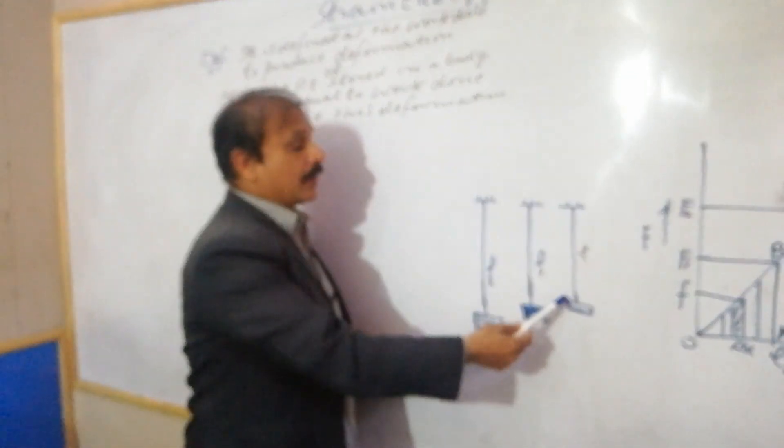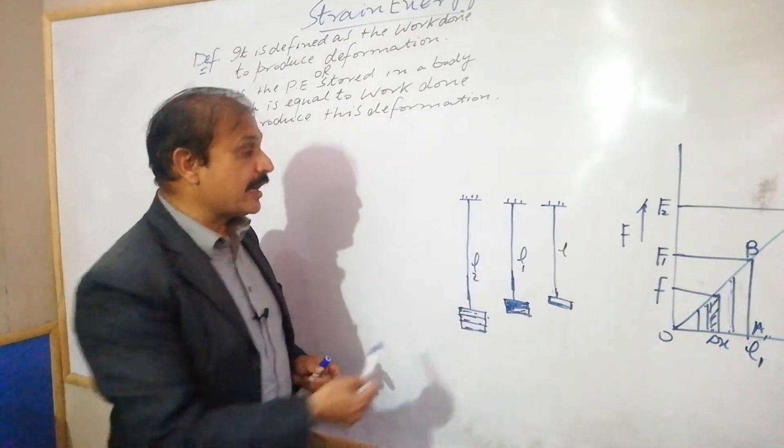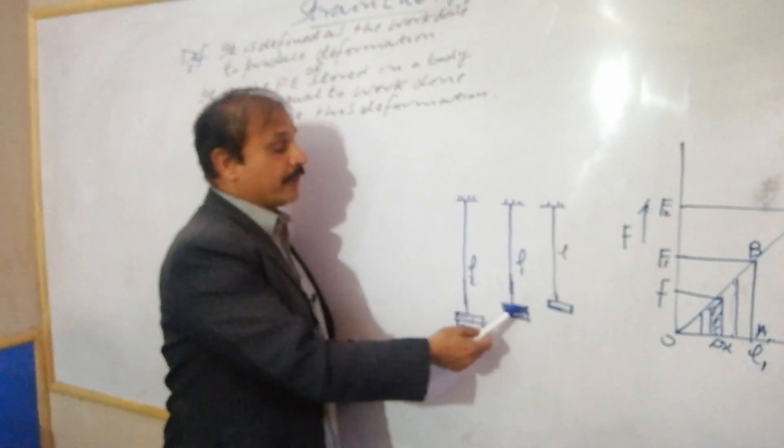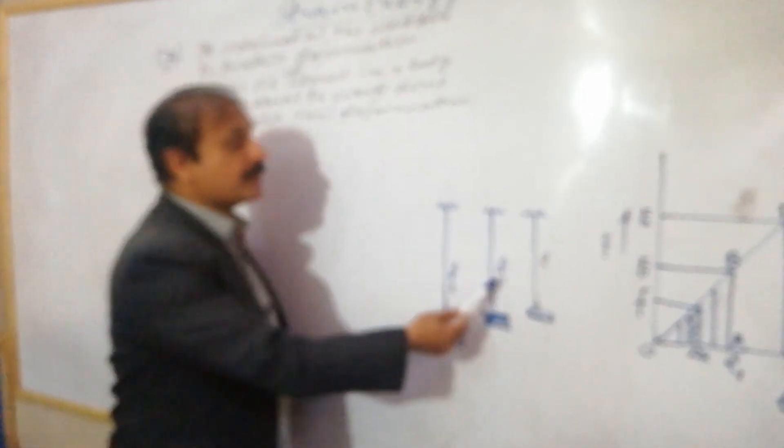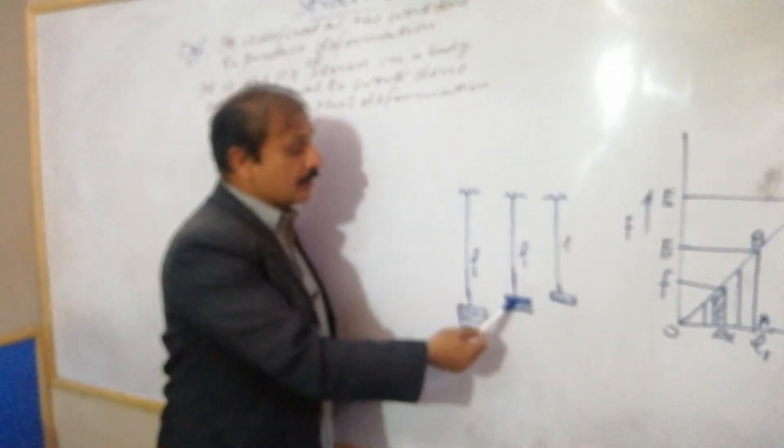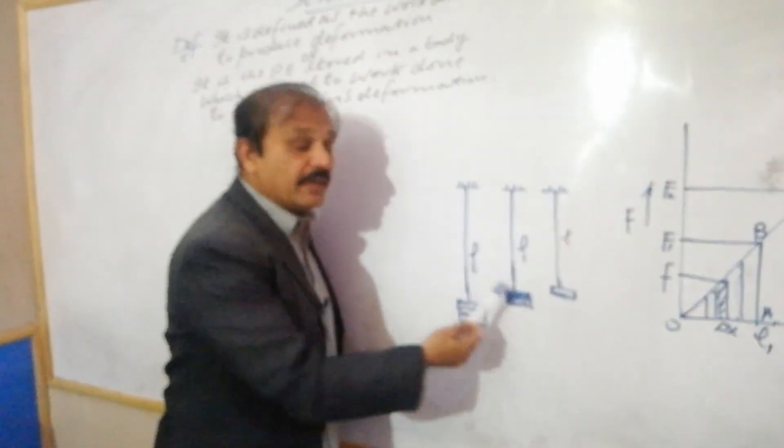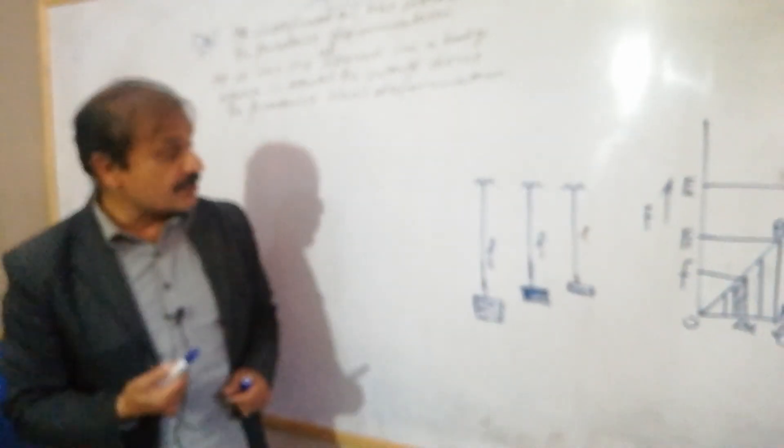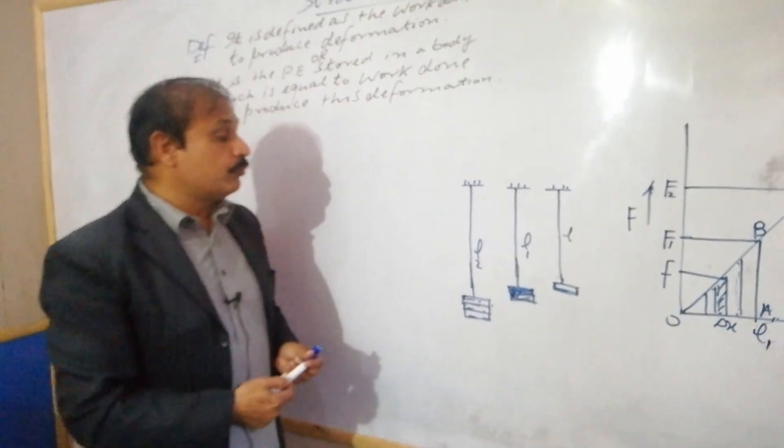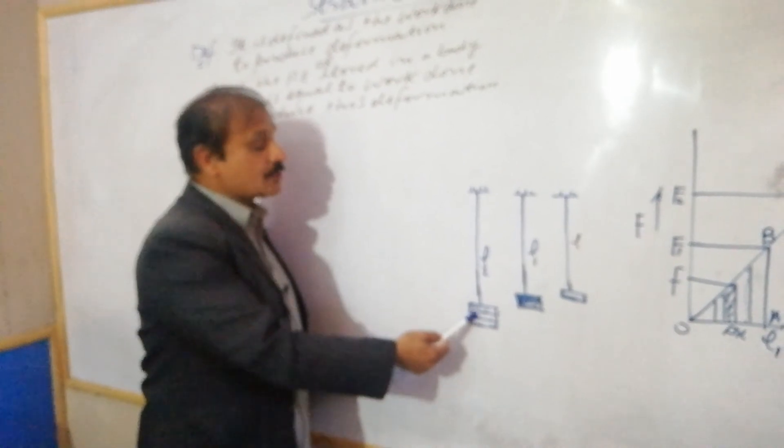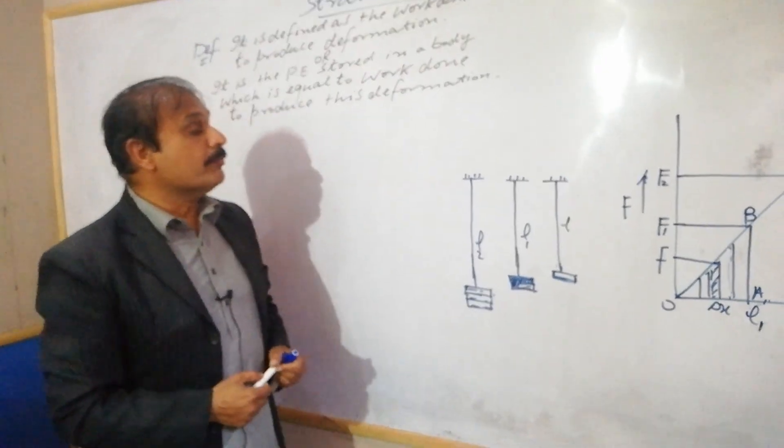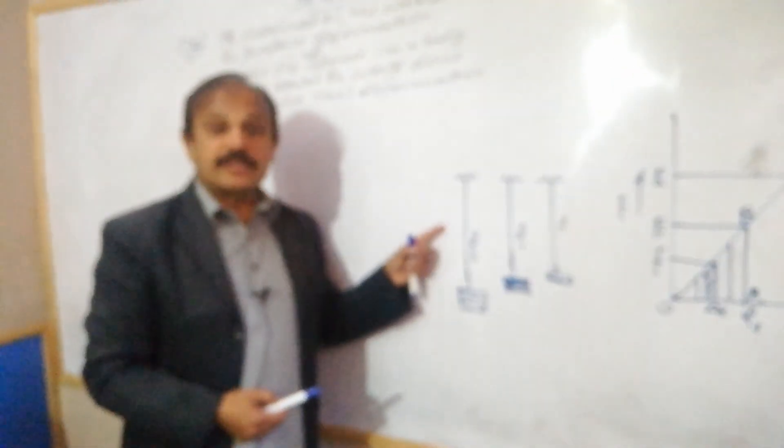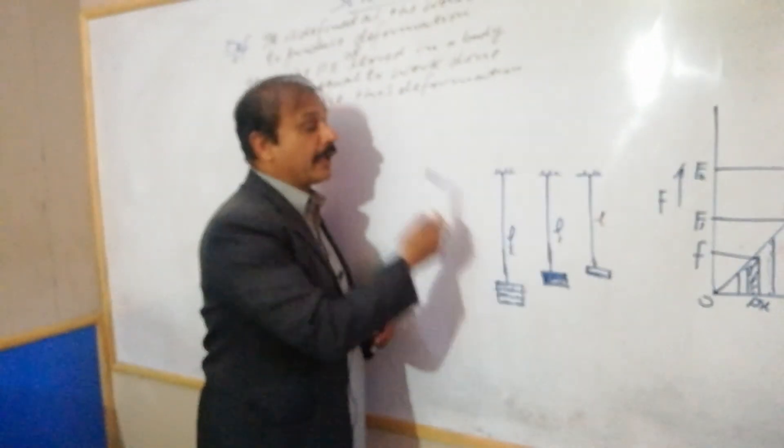First, we have a wire connected with a hanger with length L. If we add slotted weights - one weight is added - its extension increases to L1. You can see the length and extension increase because you added weight. When you add force by adding weight, the extension increases and its length increases by L1. Now adding more weights - three slotted weights - the extension increases to L2.